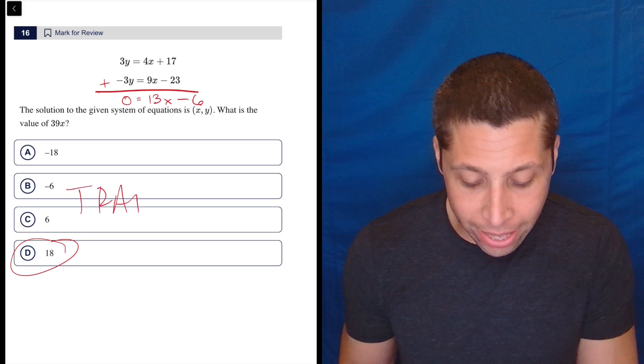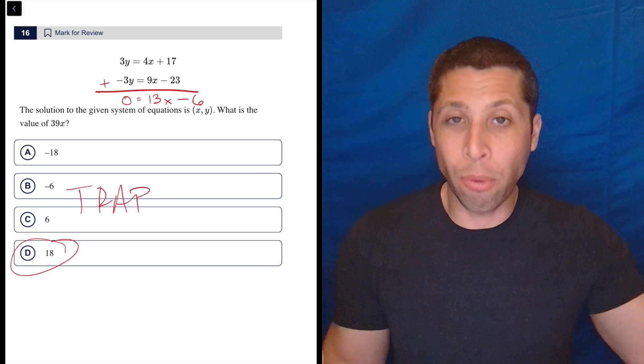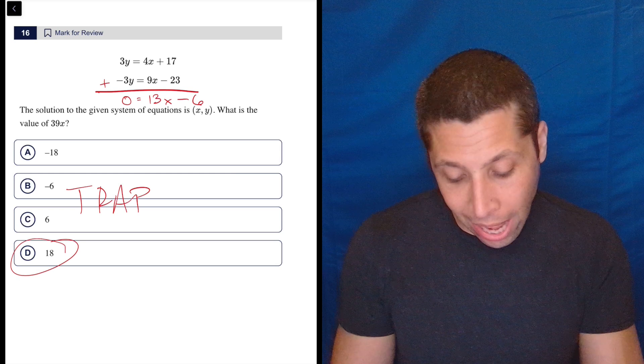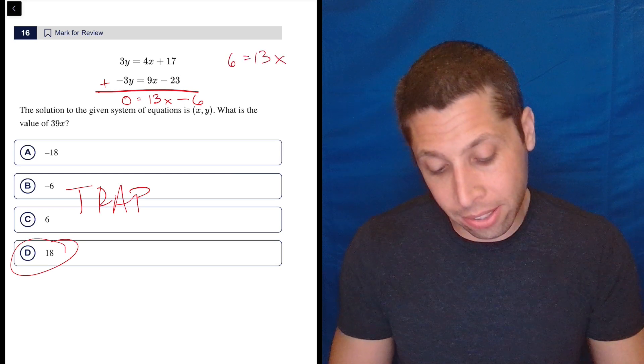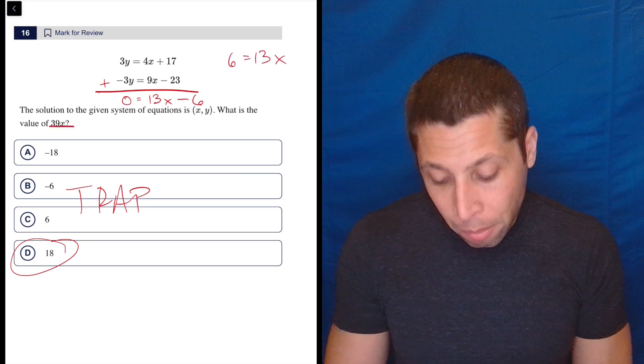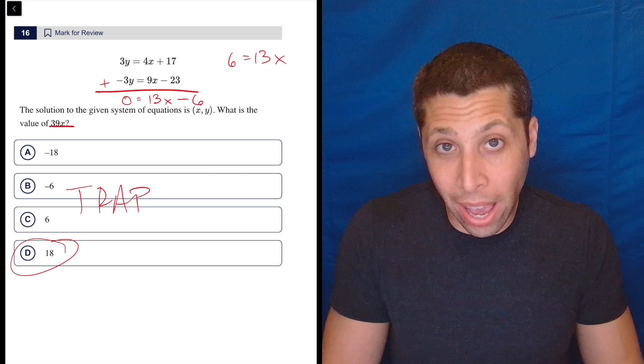They're traps that we might get if we kind of lose track of what we're doing, right? Because if we're trying to solve for x, we're going to add six over. So we get that six is equal to 13x. And you know, I don't know, maybe some people stop here. So don't do that.